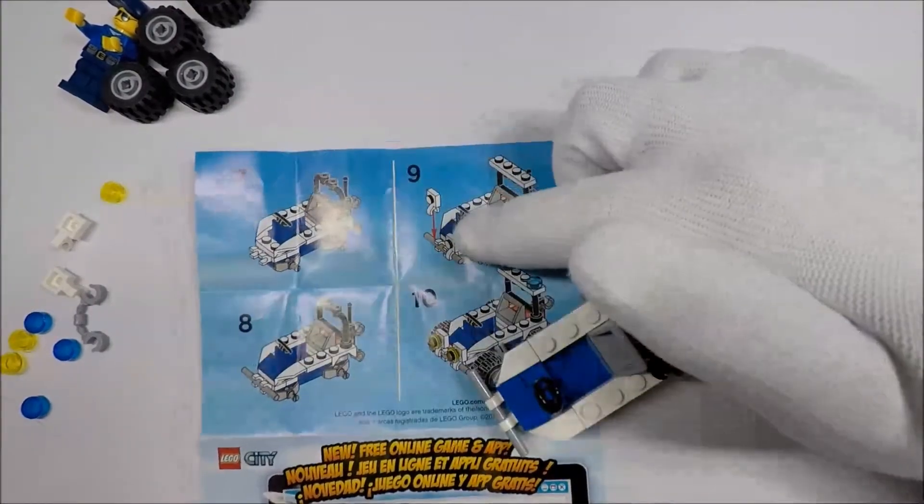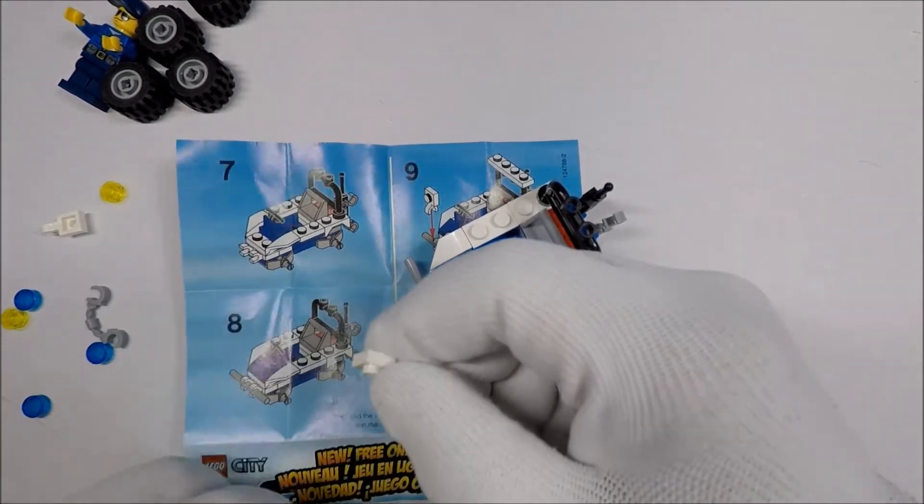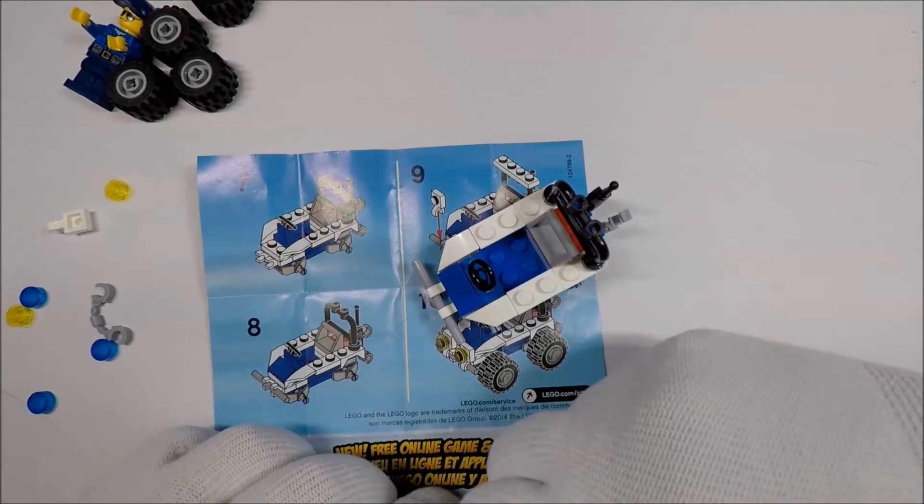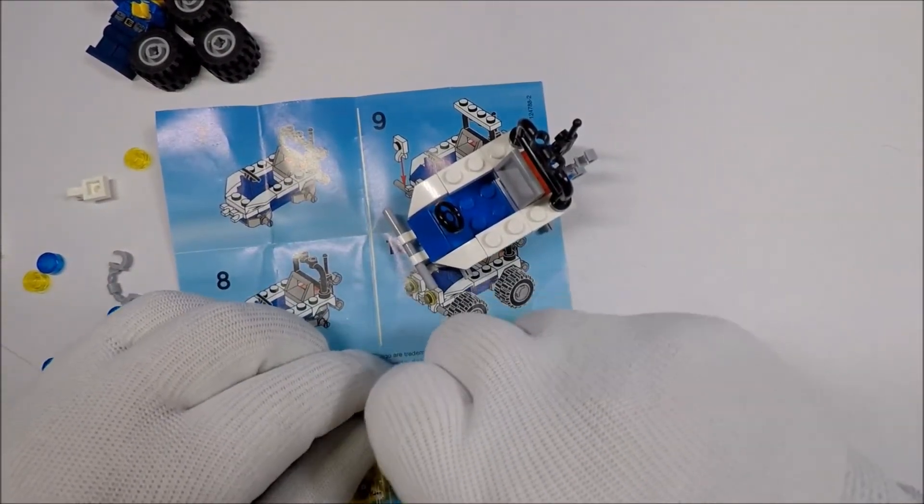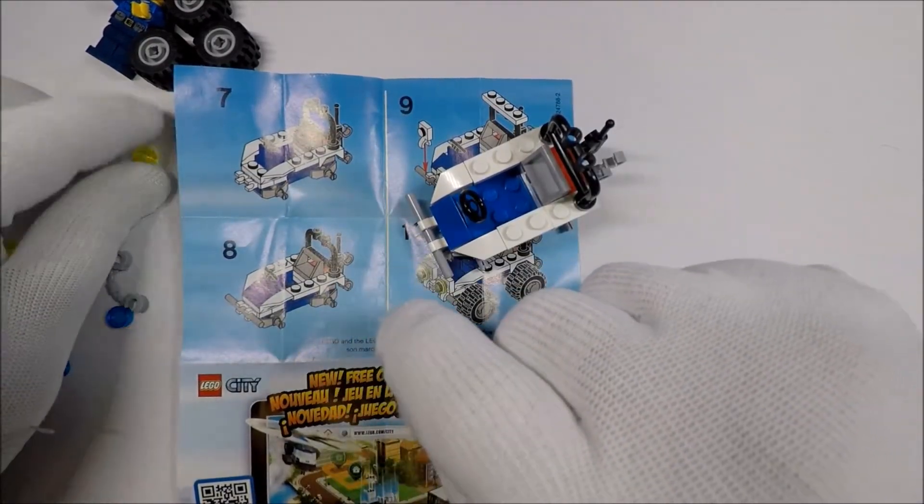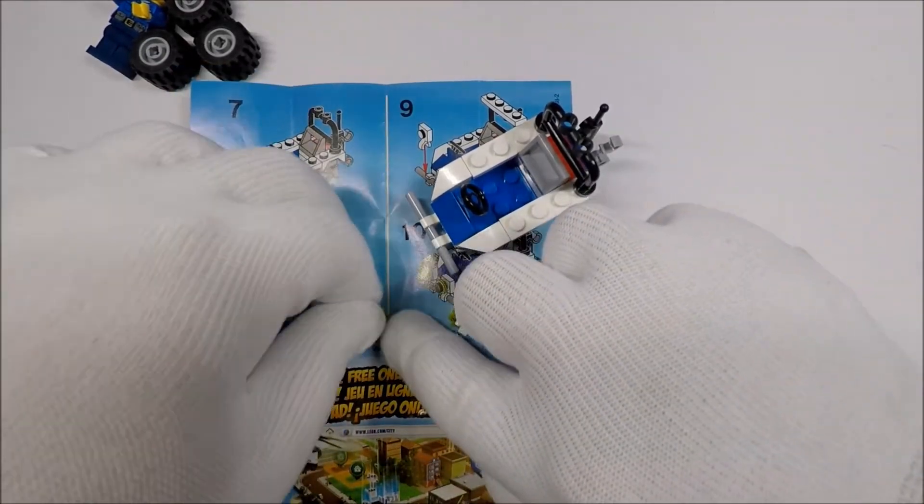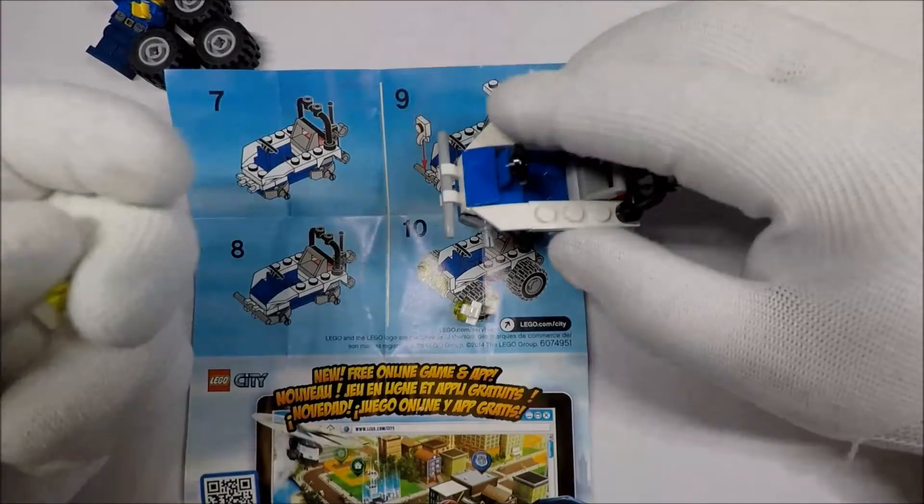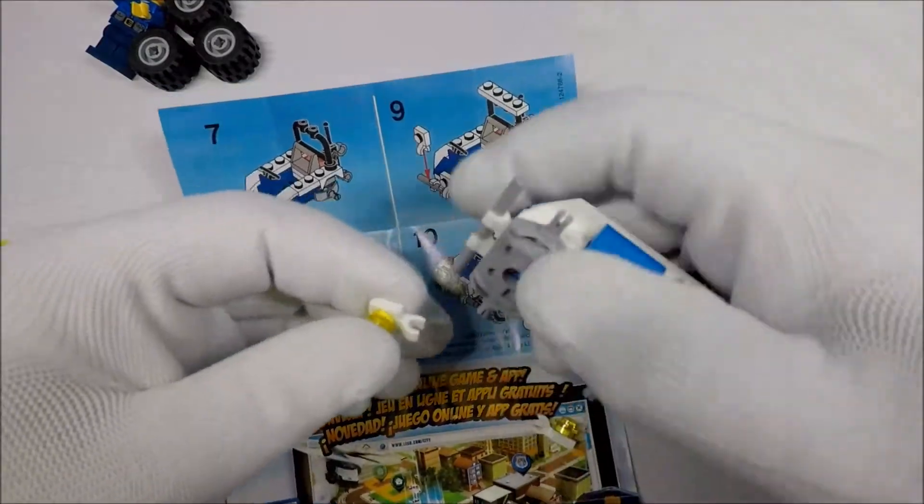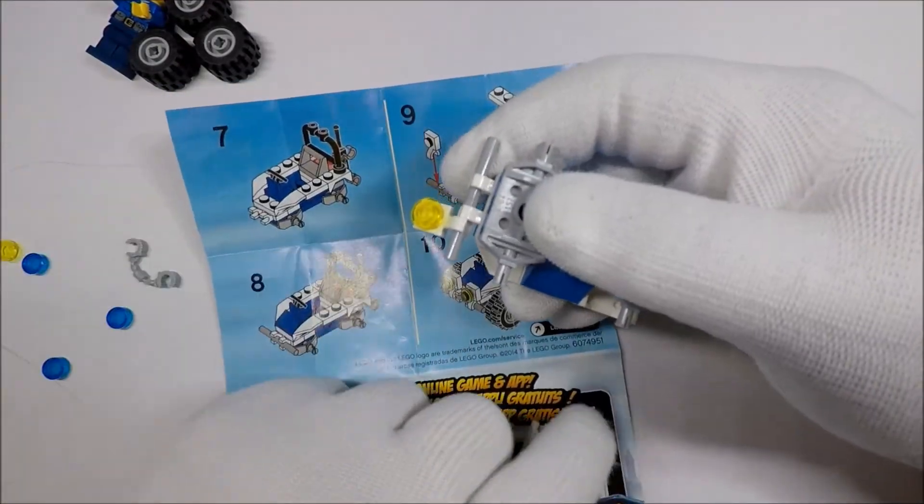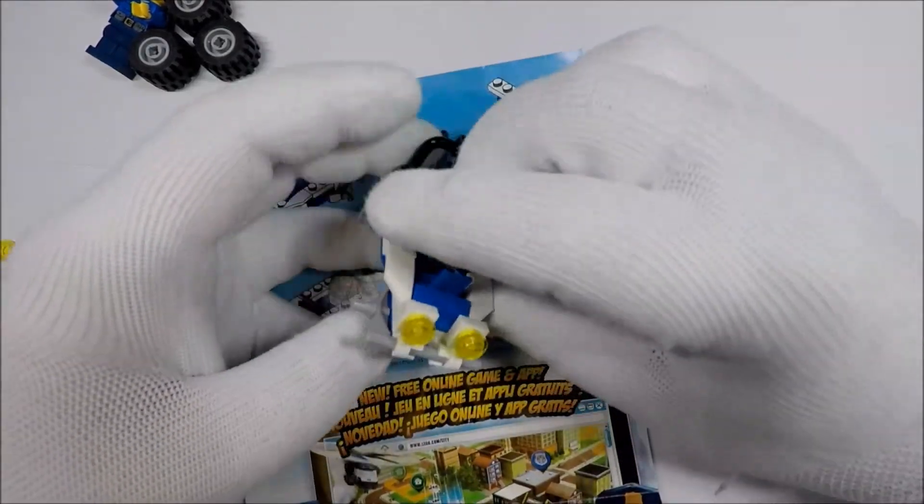And then we clip some lights onto it. One light and our second light. And then these clip right on the outside. They clip there and there, and then they fold up. That looks pretty good.